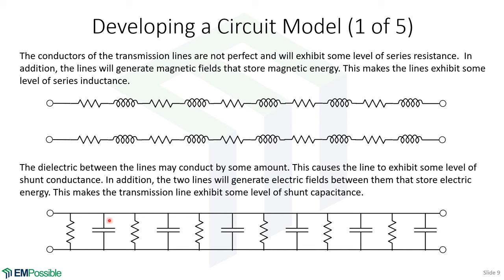Moving on to the distributed inductance: it is truly distributed across the line, but we want to write it as a single lumped element. Since L is a distributed inductance with units of henries per meter, we multiply by delta Z again to get a single lumped inductor. There is a distributed inductance because current flowing through the line generates a magnetic field circulating around it, which stores magnetic energy, giving it inductance.